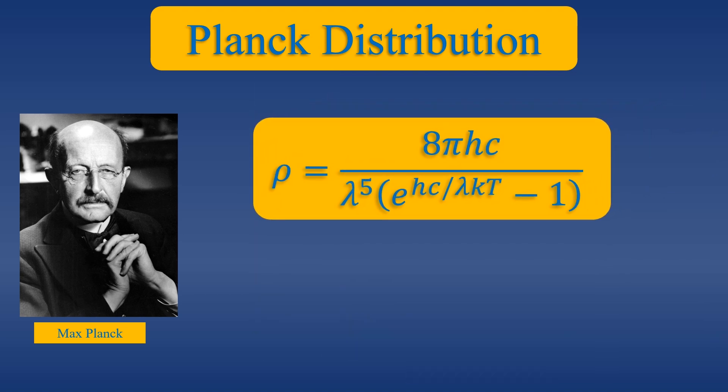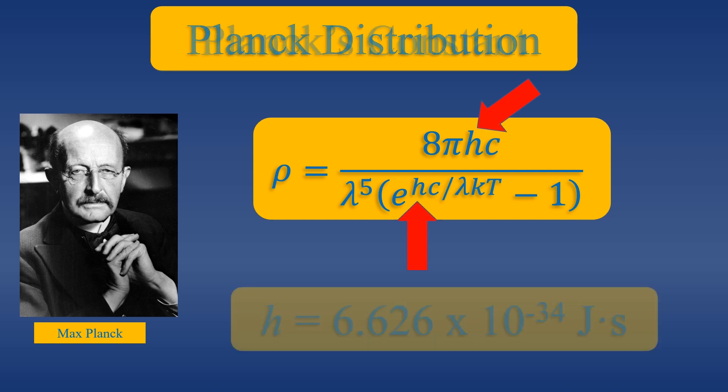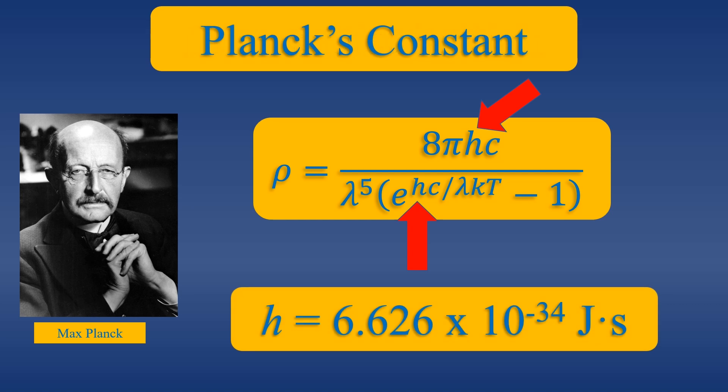There are two fundamental conclusions Planck reaches. First, Planck's distribution equation requires a constant to fit the experimental observations. This h term is famously known as Planck's constant, 6.626 times 10 raised to the negative 34 joules time seconds.